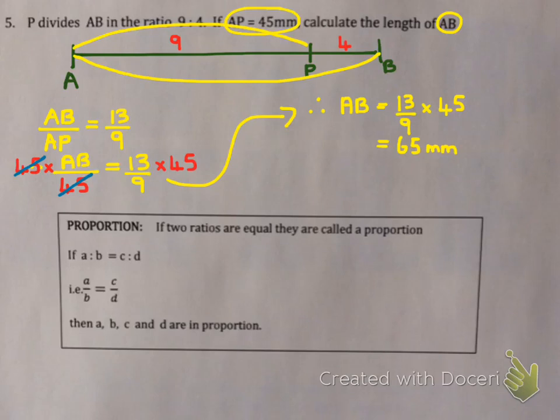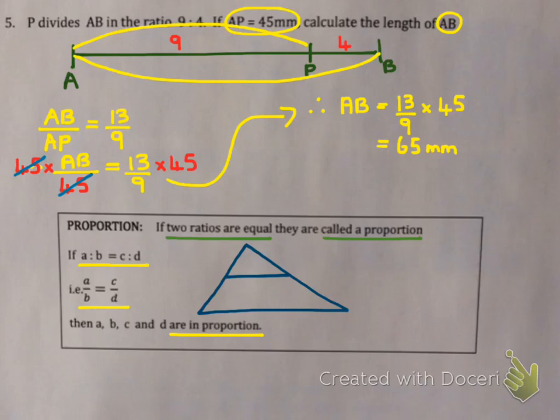Okay, the last idea is what is proportion. Proportion is if two ratios are equal, we say they're in proportion. So if two fractions are equal or if you write the ratio with the colon and they're equal, we say they're in proportion. So let me give you an example of where we're going. If we draw a triangle and there's a line that divides the two sides into two parts.